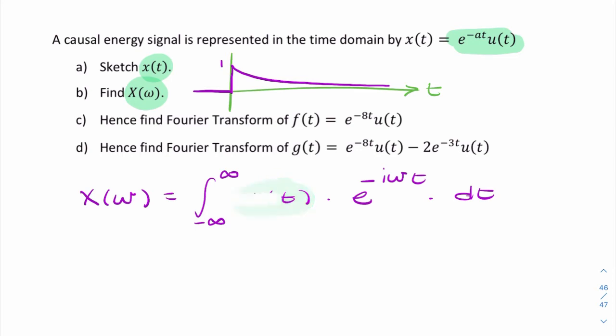So I can replace X of t with e to the minus a t. U of t is simply one. So I can either write one or simply remove it or replace the limit of the integration, the lower limit, to zero. Because u of t is only one from zero to infinity. So I can remove that and I can put a zero there. So that's my integration now.